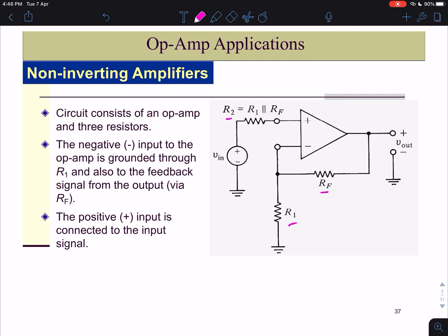When you draw the op-amp without the R2 it is also acceptable. So you have two resistors R1 and RF. The negative input to the op-amp is grounded through R1 and also to the feedback signal from the output via RF. The positive input is connected to the signal, in this case Vin.